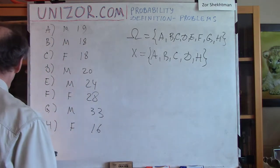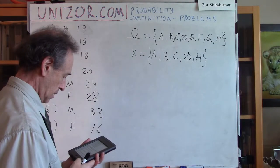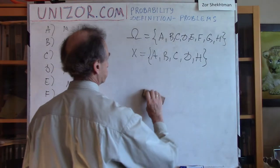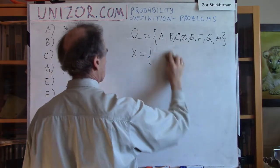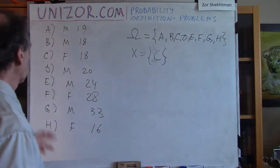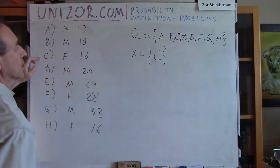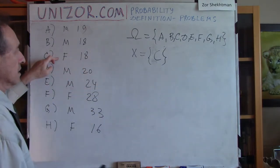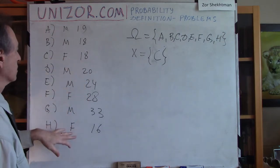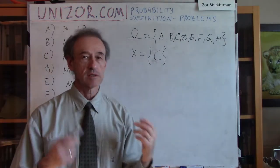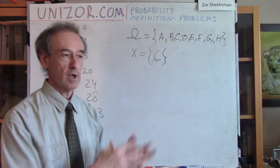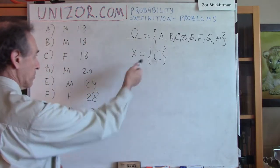Next is just one element: C. If I want only a subset containing one element, I should specify that the person is a female of 18 years old. There are no other females of 18 — there is a male of 18, but not a female. So the event is: what's the probability of picking a female of 18 years old out of this group? The probability is obviously equal to one-eighth.